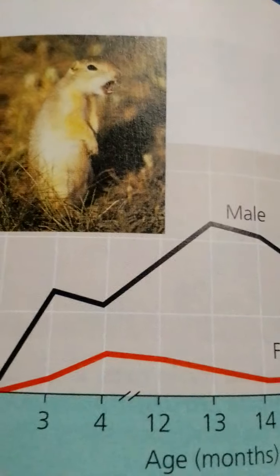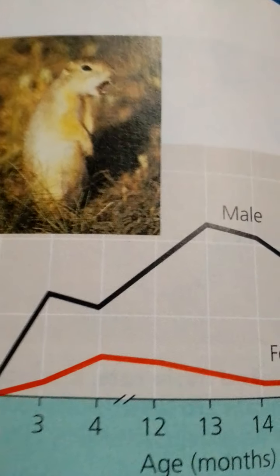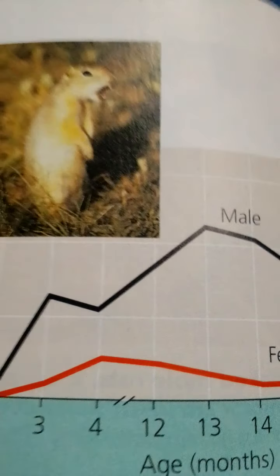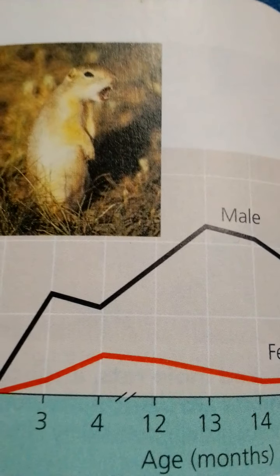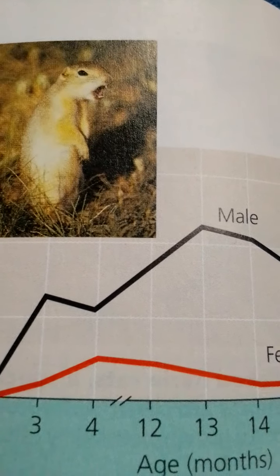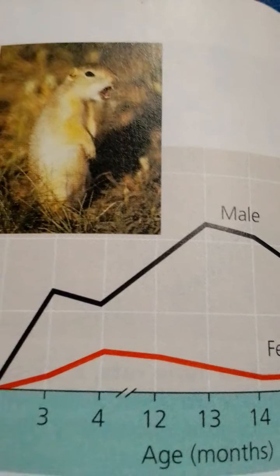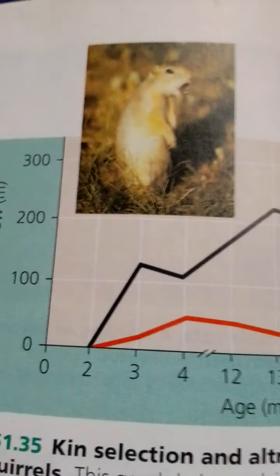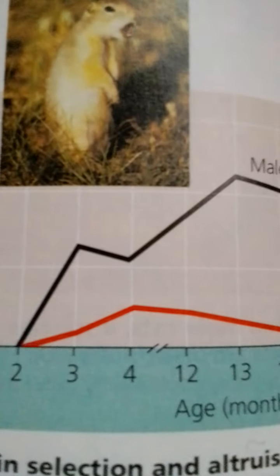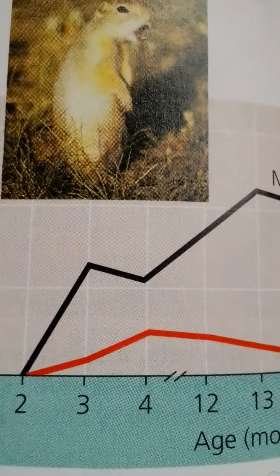British geneticist J.B.S. Haldane anticipated the concepts of inclusive fitness and kin selection by famously saying that he would lay down his life for two brothers or eight cousins. In today's terms, we would say that he would do this because either two brothers or eight cousins would result in as much representation of Haldane's genes as would two of his own offspring.